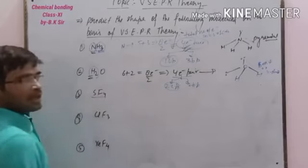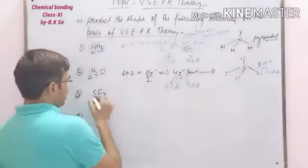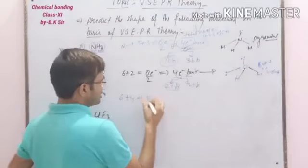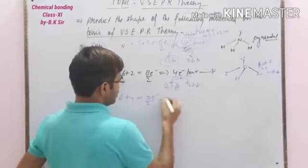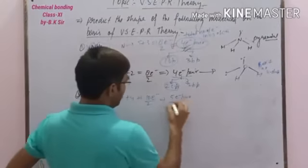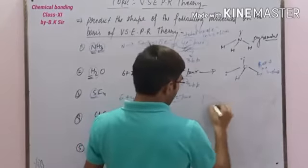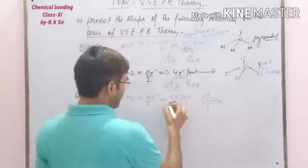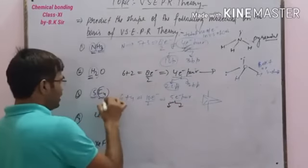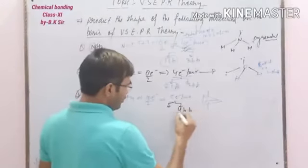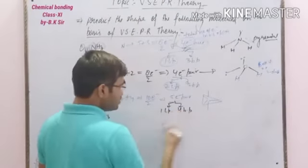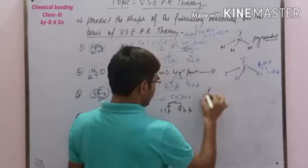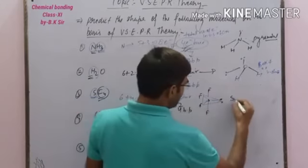The next molecule is SF₄. In this molecule, sulfur is the central atom. In the valence shell of sulfur there are 6 electrons and 4 electrons from fluorine, so the total number of electrons is 10. The number of electron pairs is 5. Due to 5 electron pairs, the geometry should be trigonal bipyramidal. There are 4 fluorine atoms attached, meaning 4 bond pairs and 1 remaining lone pair. We place the 1 lone pair in the equatorial position, and the shape of this molecule will be see-saw (C-shape).